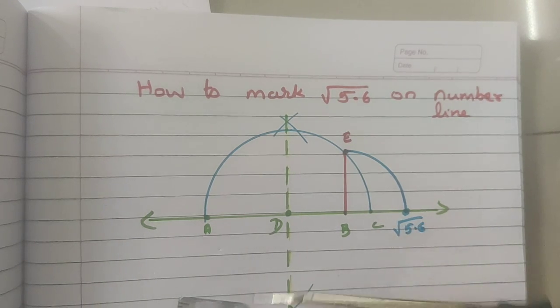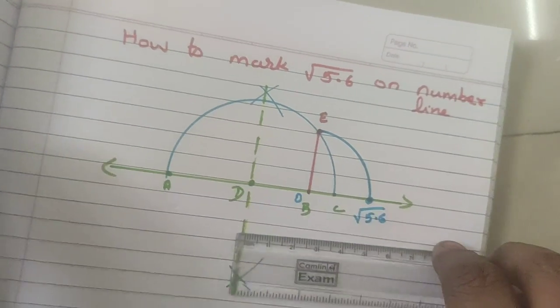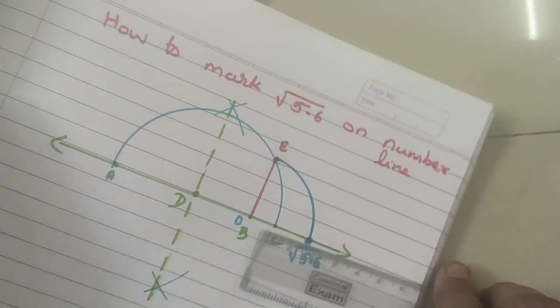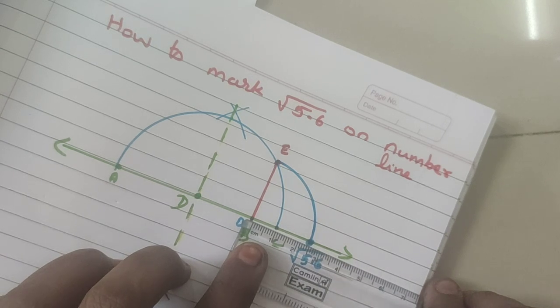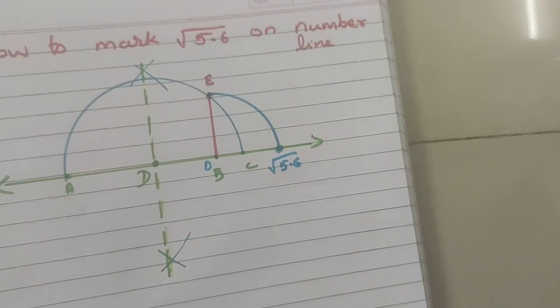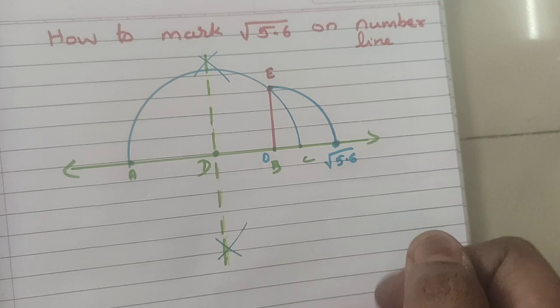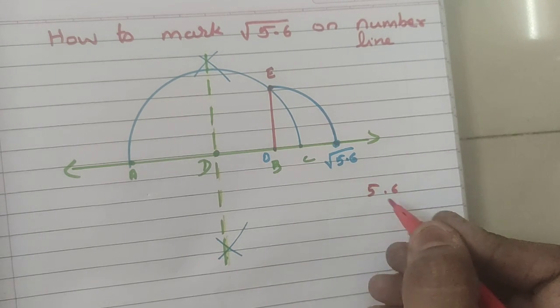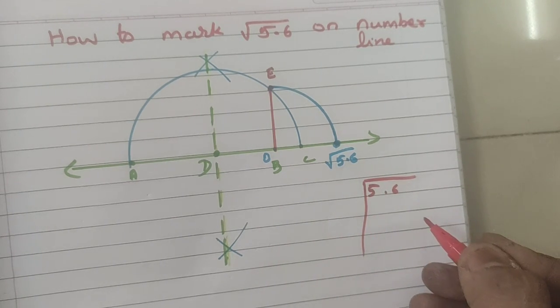So, consider this is the 0 of the scale. If you measure this, you will get around 2.3. Around 2.3 you will get. So, we can check this answer by normal calculation. Let me do the calculation here. So, 5.6. Find the square root of 5.6 by the square root method.